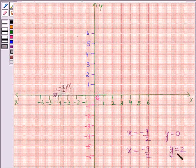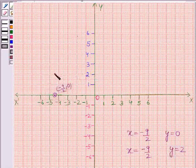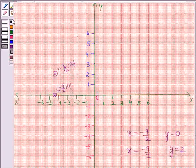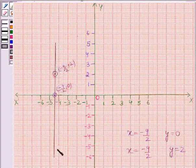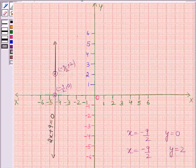The second point is when y is equal to 2, then x is equal to minus 9 by 2. So this is our required point minus 9 by 2, 2. Now we will join these two points by a straight line. This is the required line representing the equation 2x plus 9 is equal to 0. This is the required geometric representation of 2x plus 9 is equal to 0 when it is treated as an equation in two variables.